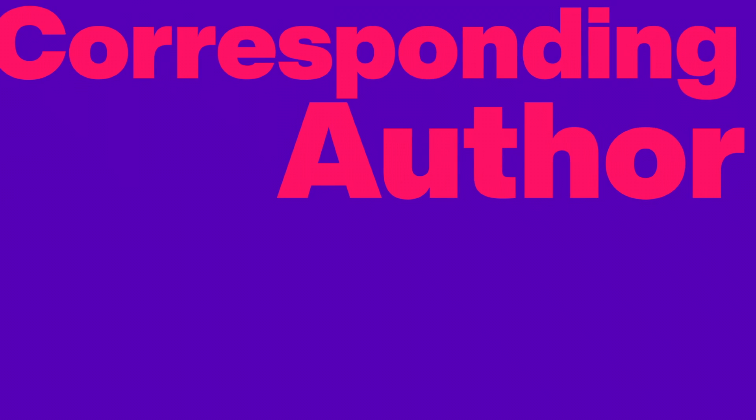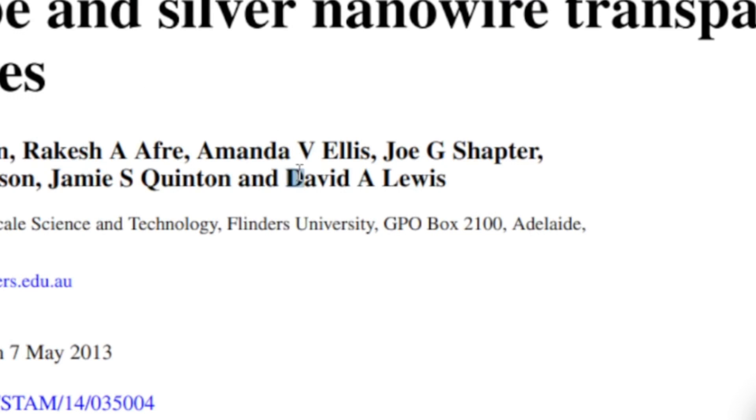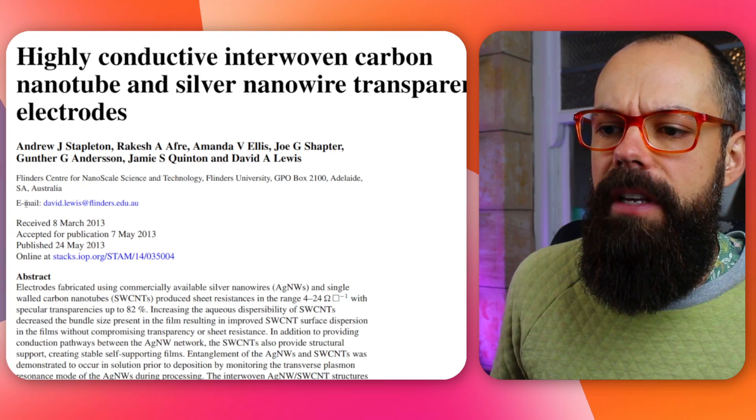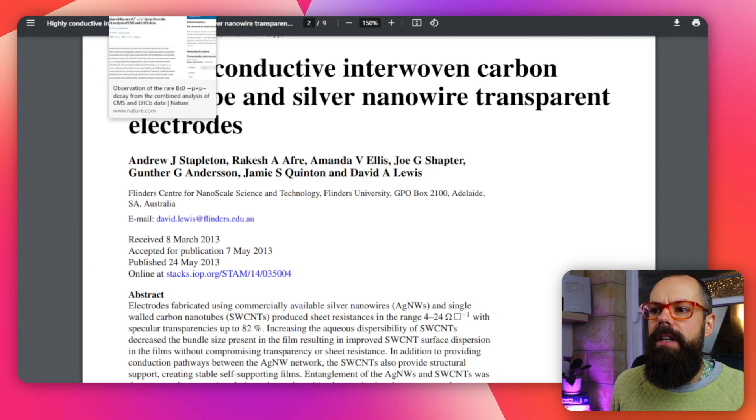What about last author, or corresponding author? There's another really important part of this order list. The corresponding author is quite often the last person on the name list. In this case it was David A. Lewis — the principal investigator who was driving everything and got the money. This person at the end is mainly in control of all the research, not on a day-to-day level, but overarchingly: 'this is the project, I've got the money, now go.' The corresponding author sometimes gets a star next to their name, and their email is cited because if anyone has questions about the paper, they contact this person directly.